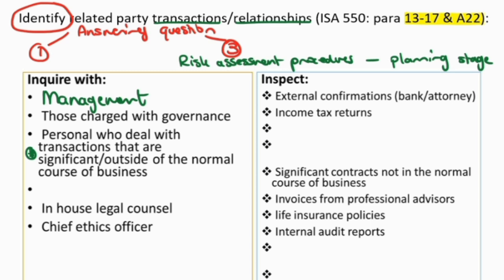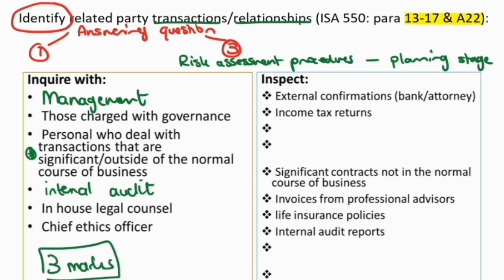I can also inquire with in-house legal and chief ethics officers. About three marks would be available if they asked you how you can identify related party transactions — three marks for discussing who you could potentially go and inquire with.